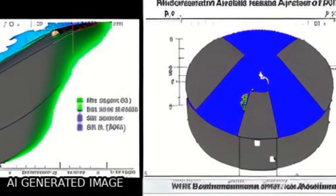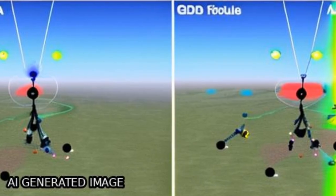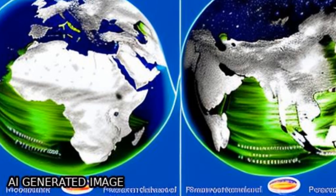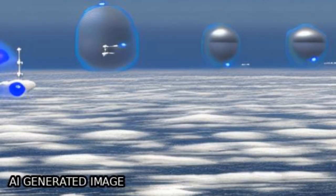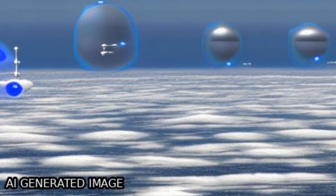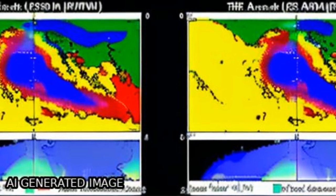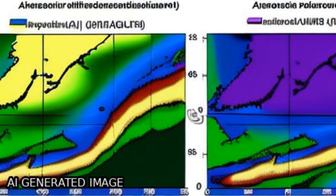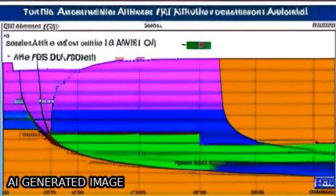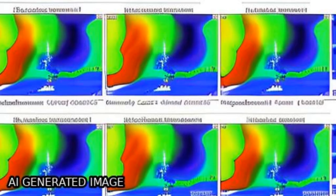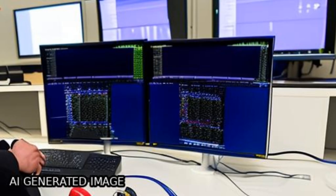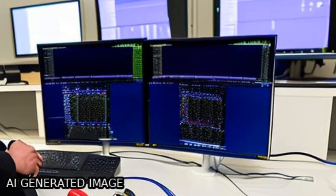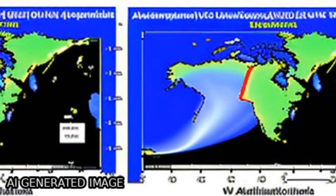The simulation domain covers Northeast Asia at 15 kilometers horizontal resolution, and the assimilation and forecast skill is evaluated for the KORUS-AQ intensive observing period.